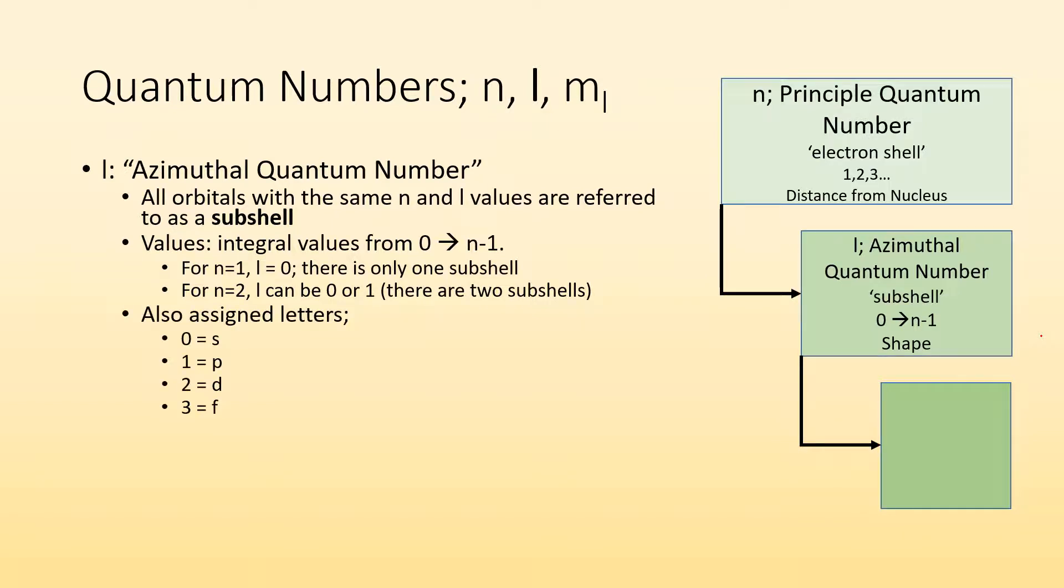We also assign them letters. So if L is zero, that's for the S subshell. If it's one, that's the P subshell. If it's two, that's the D subshell. And if it's three, that's the F subshell. So you would say it just like that. 2P is referred to as the 2P subshell. All of the orbitals in the 2P subshell are said to make up the subshell. Now this quantum number is going to define the shape of the orbitals. So that's going to be a whole other video. But each of these subshells have different shapes to them. So S has a different shape than P, which has a different shape than D, which has a different shape than F. And we'll get more into that in the future.